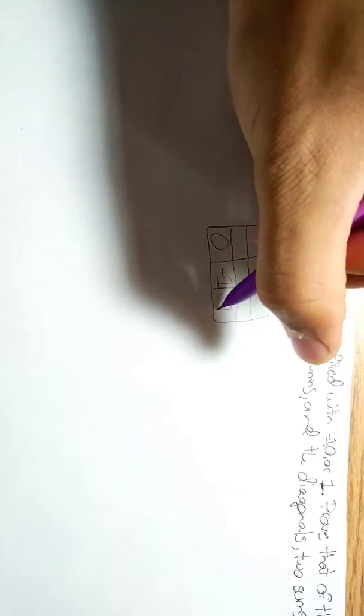And so all these little squares over here are either going to have a 0, a negative 1, or a 1.